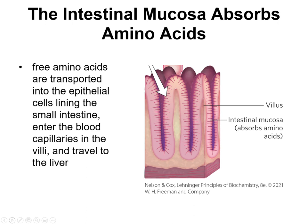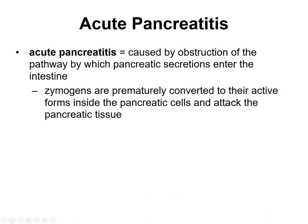These proteases make free amino acids, which are transported into epithelial cells lining the small intestine and then enter the bloodstream, traveling to the liver. In acute pancreatitis, the zymogens responsible for digesting dietary proteins become active prematurely, and those proteases attack pancreatic cells, eating away the pancreas. It's extremely painful and requires immediate hospital treatment.